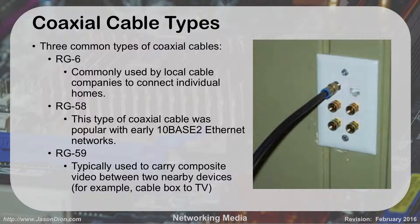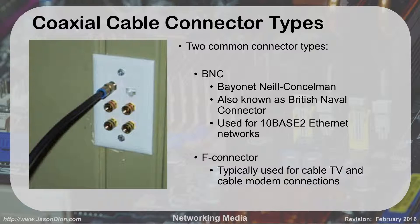The connector types on coaxial cables are the BNC connector and the F-type connector. The BNC, also known as the Bayonet Neill-Concelman or British Naval connector, was used in old 10Base2 Ethernet networks. For cable TV, you use an F-type connector — that screw-on connector on the back of your TV. BNC connectors are a push-and-twist — only half a twist to lock in place — while the F-type you actually screw on.